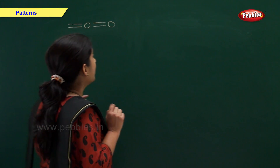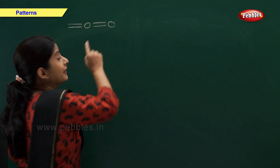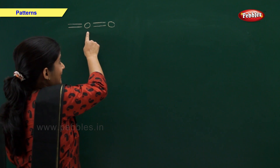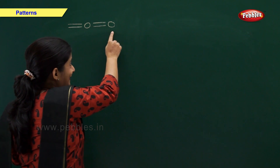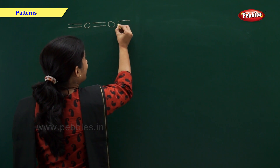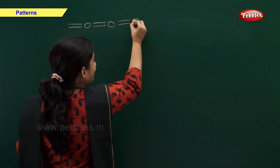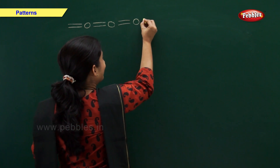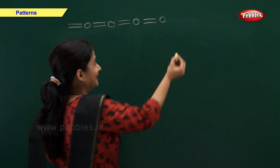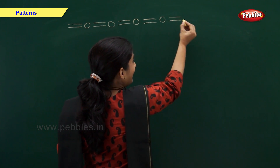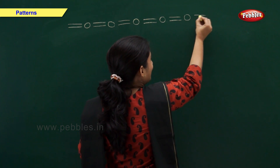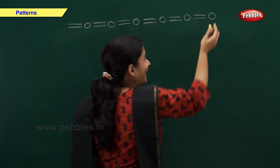As you can see we have some shapes on the board. These shapes are in a particular pattern — two lines and a circle. Again two lines and a circle. So friends, now let's complete this pattern. Two lines and a circle. Two lines and a circle. Again two lines and a circle.